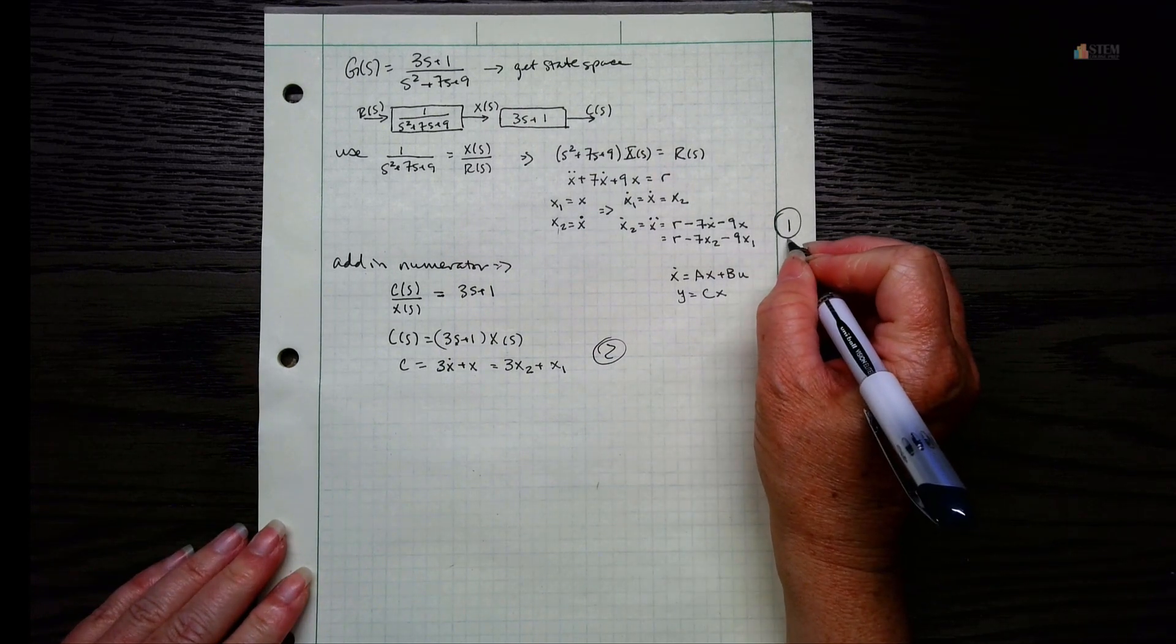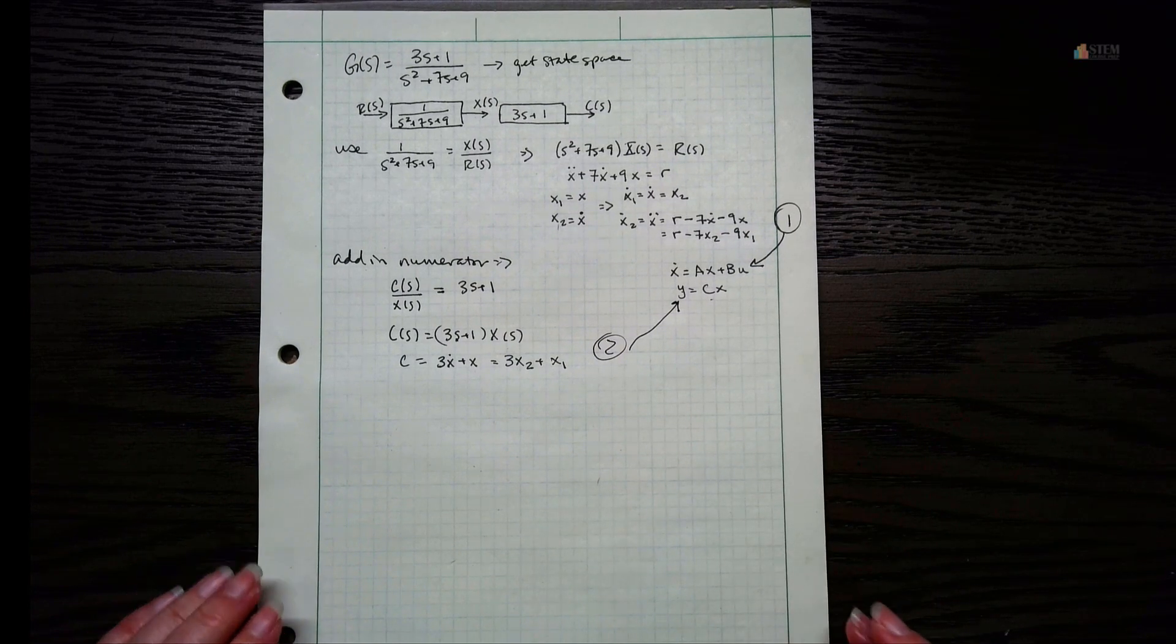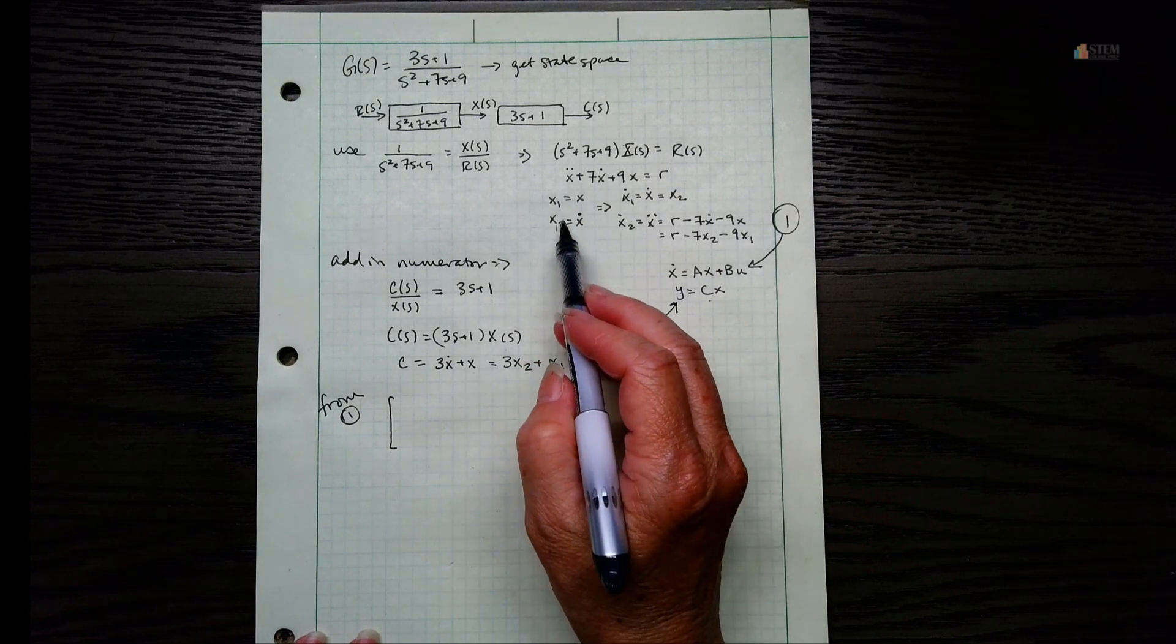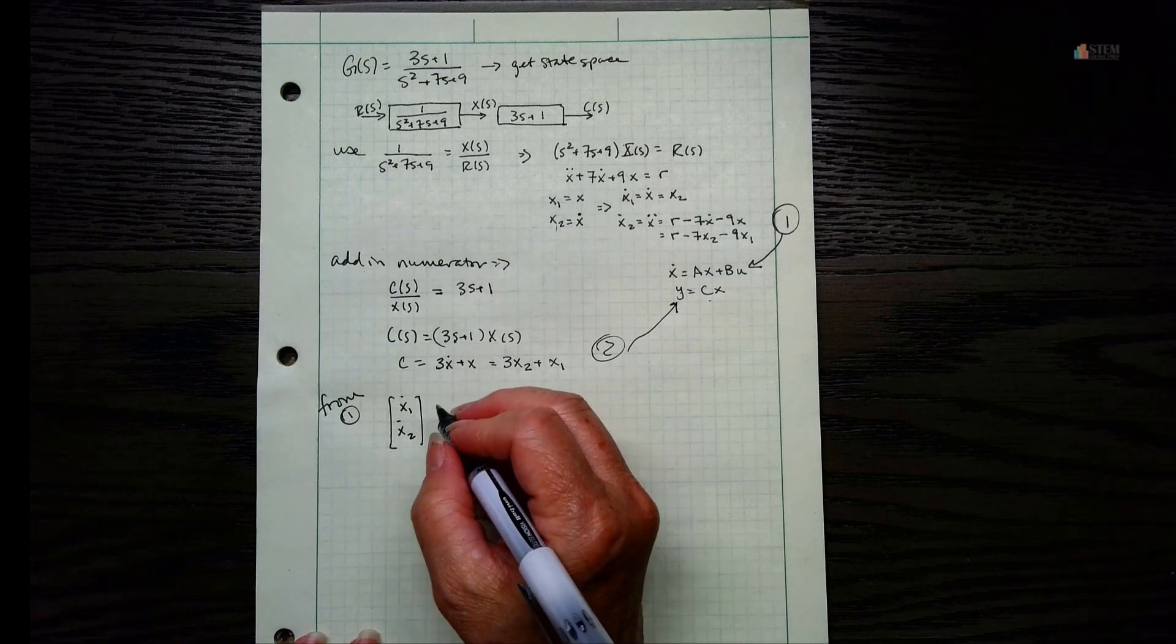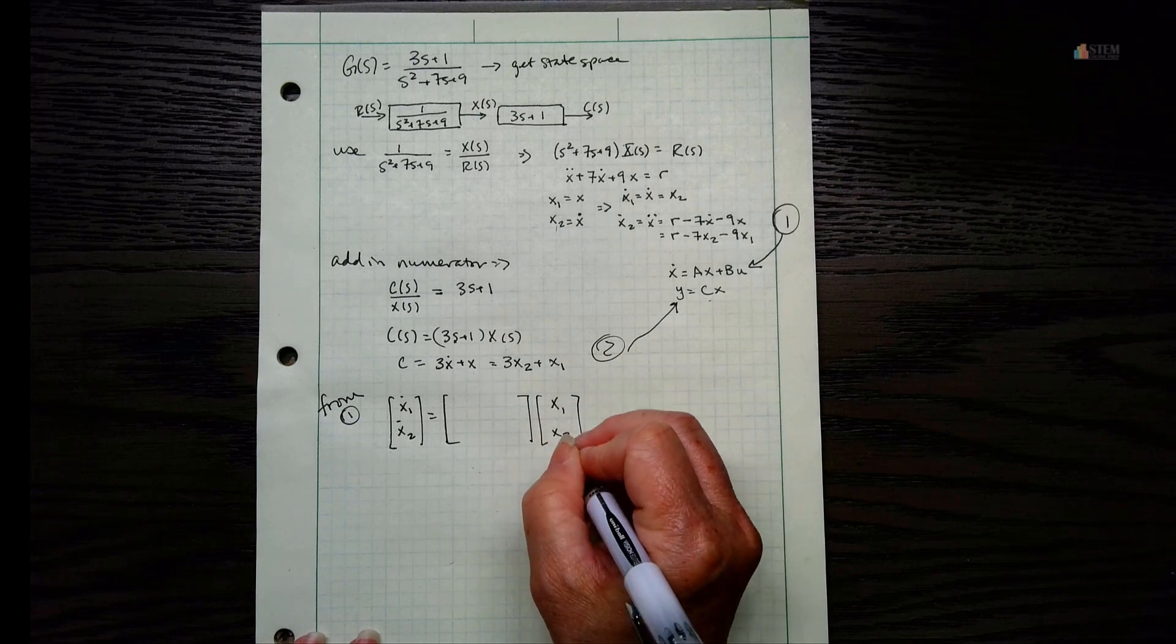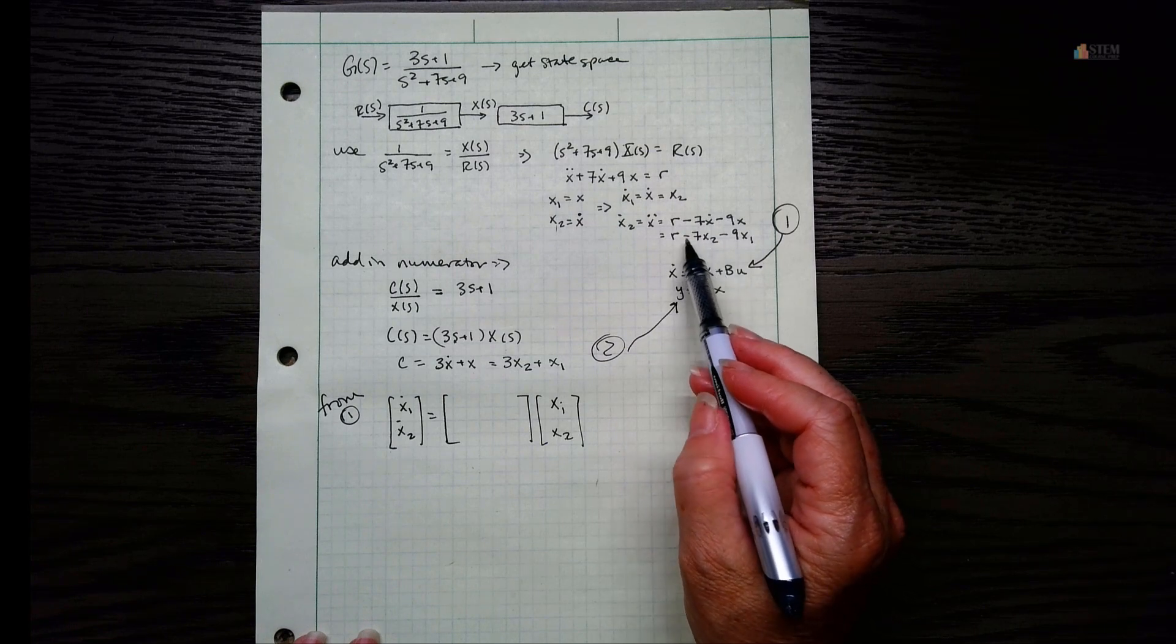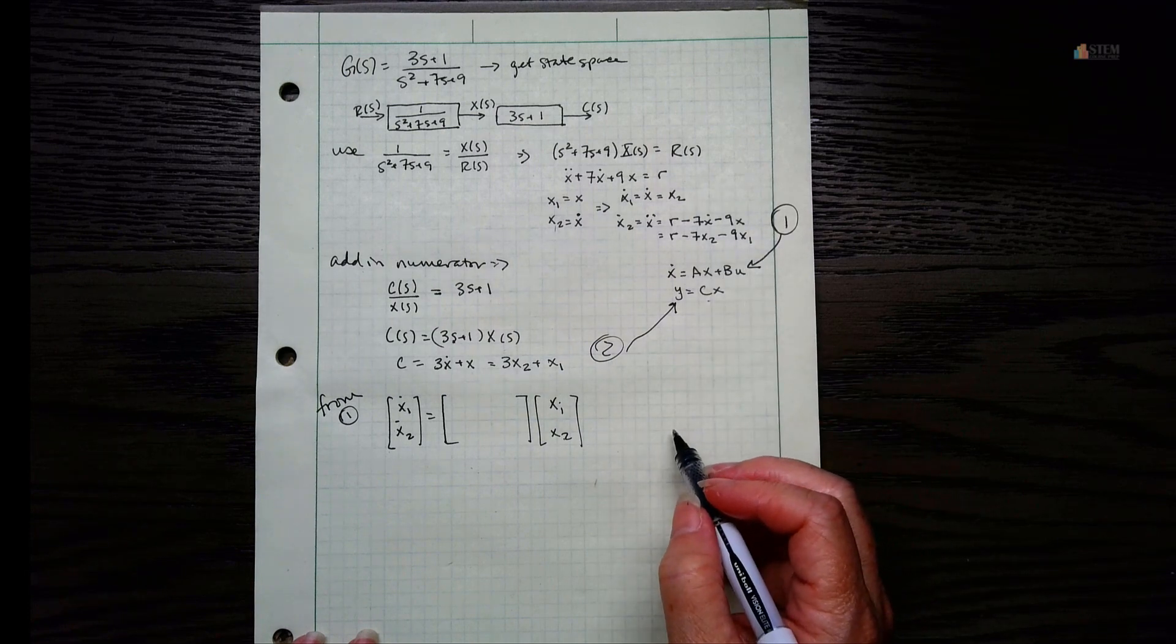Number 1 here, this information is going to be used in this first equation. 2 is going to be used in this second equation. So let's put from 1, and then let's write this out in matrix form. Our variables, we have X1, X2, so on the left side we've got the derivative of those: X1 dot, X2 dot. And then now let's do our A matrix. Our A matrix is multiplied by X, so that's X1 and X2.